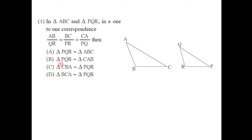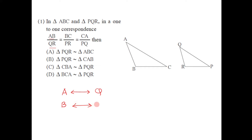To decide the correspondence between the vertices of these two triangles, we use the information given — the ratio of corresponding sides. From that we can decide the corresponding vertices. The first ratio is AB/QR, so from this the corresponding vertex of A is Q and the corresponding vertex of B is R.